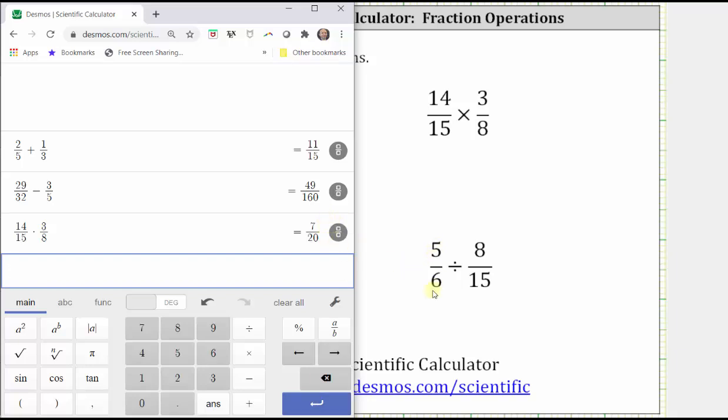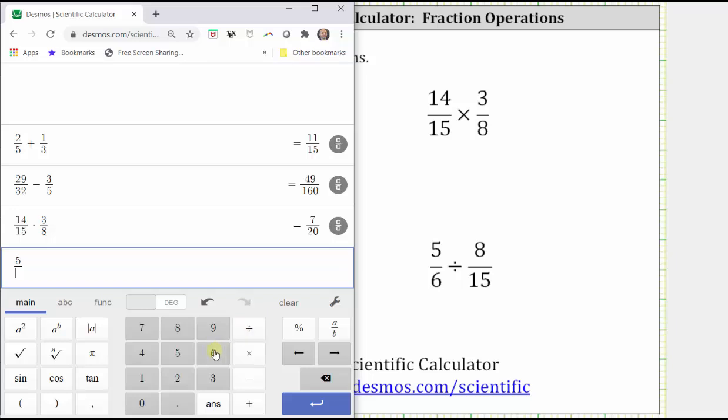Finally, we have 5/6 divided by 8/15. The quotient will look different once entered. Let's enter five divided by six, right arrow, divided by.